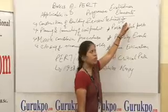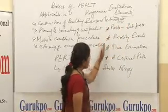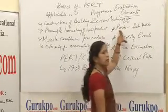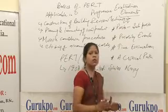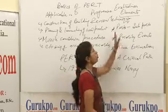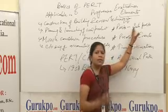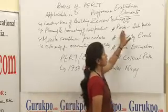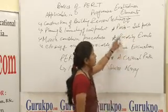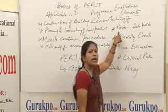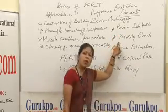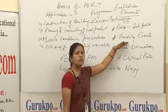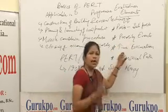If we want to understand the elements of PERT, some prominent procedures are followed. First, we dissect the whole project into activities and sub-activities so we can understand how many activities will be involved. Then we prioritize events — which is first and which is second. After prioritization, we estimate the time each activity will take to complete.